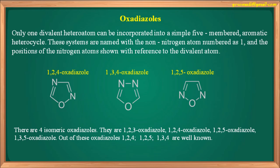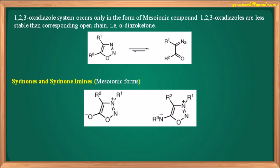There are four isomeric oxadiazoles: 1,2,3-oxadiazole, 1,2,4-oxadiazole, 1,2,5-oxadiazole, and 1,3,5-oxadiazole. Of these, 1,2,4-, 1,2,5-, and 1,3,4-oxadiazoles are well known and are the focus of this discussion. The 1,2,3-oxadiazole system occurs only in the form of mesoionic compounds called syndones or sydnonimines, which are less stable than the corresponding open-chain alpha-diazo ketone system, with nitrogen bearing a positive charge. Oxadiazoles have drug importance as anti-cancer agents, anti-retroviral agents, anti-hypertensive agents, antibacterial agents, and anti-hypertensive doxazosin.